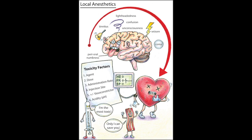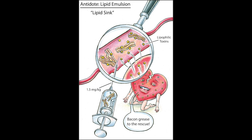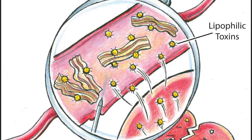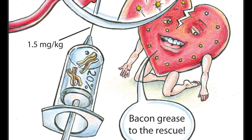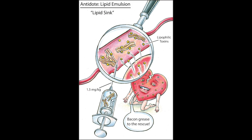One would follow standard ACLS protocols for cardiac collapse. The antidote, known as lipid emulsion — which has been drawn here using bacon to simulate — is a very interesting type of antidote, with the heart reporting that bacon grease has come to the rescue.